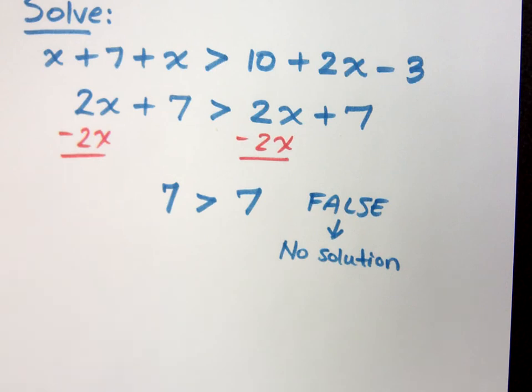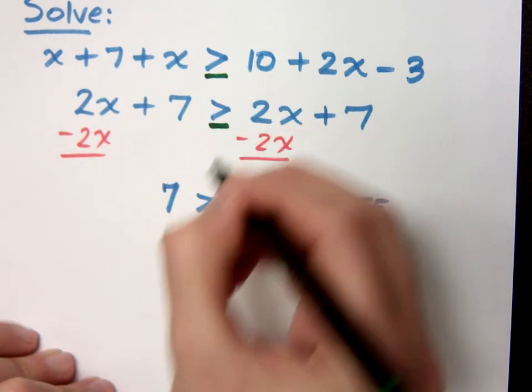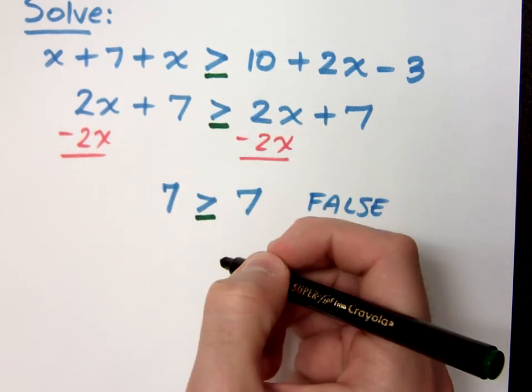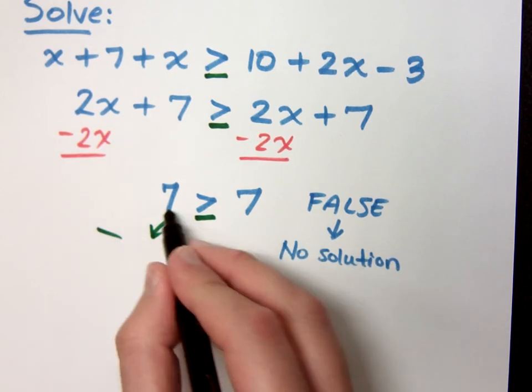Now, what if I change things up a little bit? If on here I had had equal to, and this were equal to, and that were equal to, well, in that case, is 7 greater than or equal to 7?